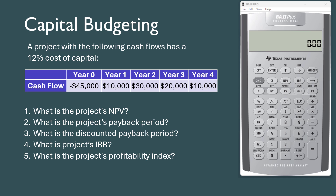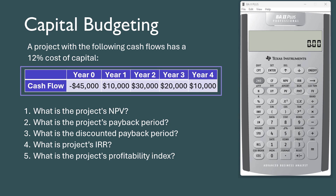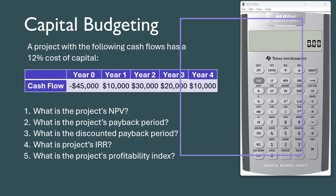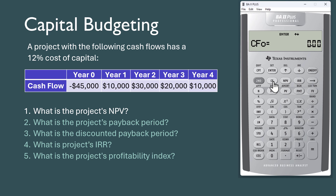In this video, I'm going to answer these capital budgeting questions for these cash flows using the BA2 Plus calculator and formulas. To compute the net present value, press CF on the calculator.